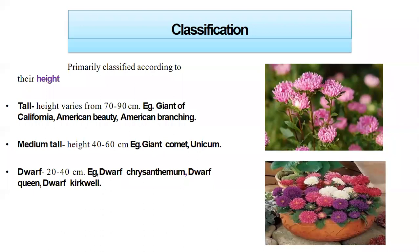Classification: China Asters are primarily classified according to their height — tall, medium-tall, and dwarf. Those belonging to the tall group have a height of about 70 to 90 cm; examples are Giant of California, American Beauty, American Branchings, Comet and Unicum. Medium varieties range between 40 to 60 cm; examples are Giant, Comet and Unicum. The dwarf group has a height of 20 to 40 cm; examples are Dwarf Chrysanthemum, Dwarf Queen and Dwarf Pickwell.